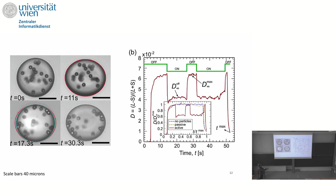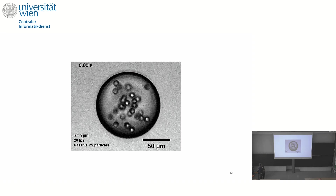In control experiments with passive particles or no particles — the blue and orange curves — there is deformation from the flow but nothing happens when you turn the lights on or off. So the decrease in deformation is due only to the activity of the particles.